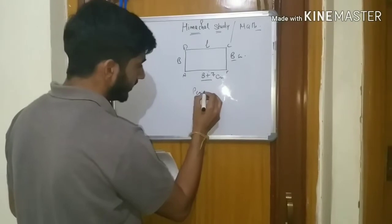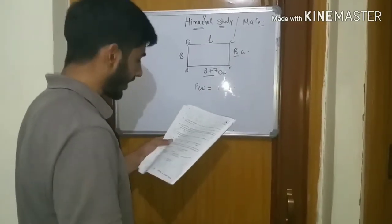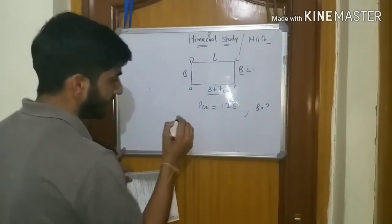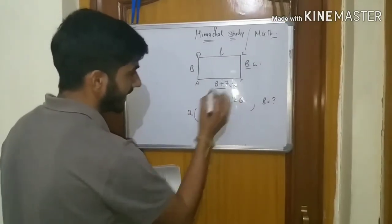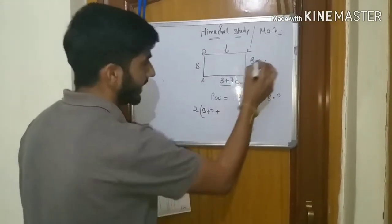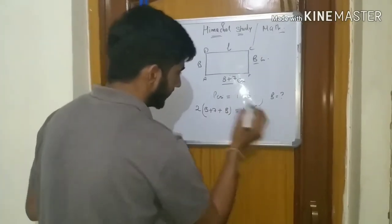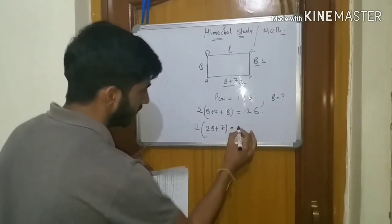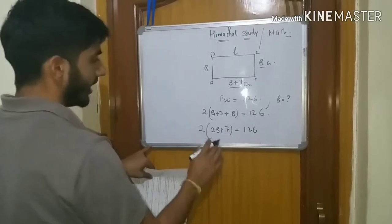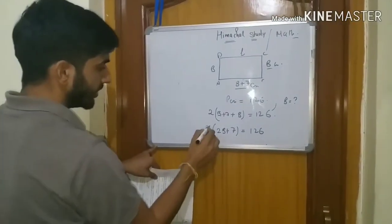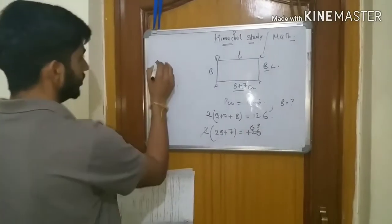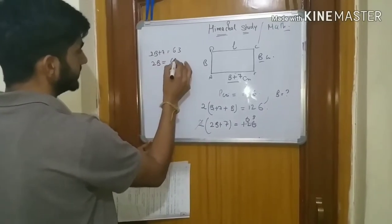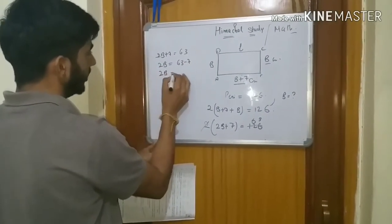So the perimeter is 126 cm. Now, the perimeter formula is 2 into length plus breadth. The length is b plus 7, and breadth is b, which equals 126. So 2 into (2b plus 7) equals 126. Dividing both sides by 2: 2b plus 7 equals 63. Therefore 2b equals 63 minus 7, so 2b equals 56.